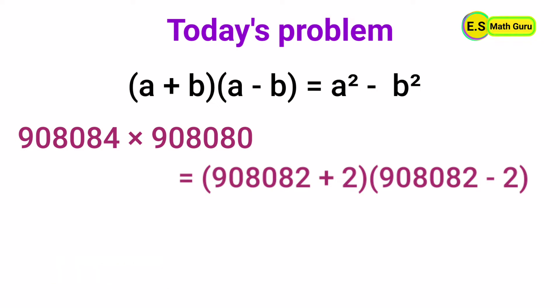Now it can be written as a squared minus b squared, that is 908,082 squared minus 2 squared, which can be written as 908,082 squared minus 4.